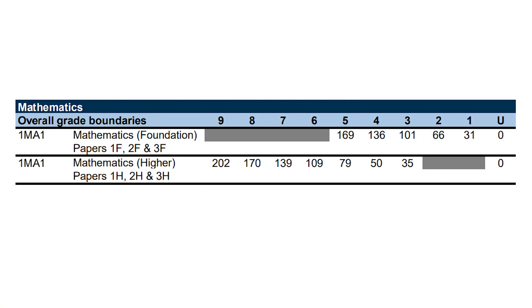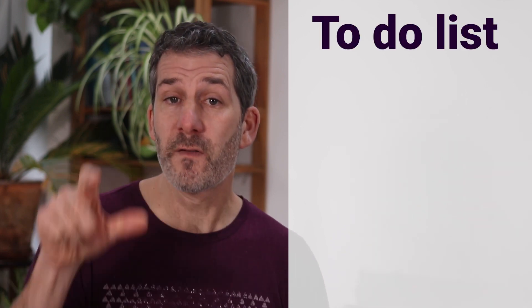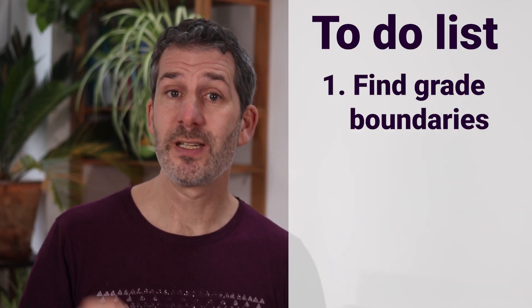On the screen there are the grade boundaries for the Edexcel June 2018 papers. The mark you can see there is the total mark you need from all three papers, so that's out of 240, and it varies but it's typically between 30 and 35 marks between each grade. So if you've got 136 marks and just scraped a grade 4 in a foundation paper, you needed 33 more marks to get a grade 5 — so an average of 11 per paper. We don't know what the grade boundaries will be for your actual exam, but you've now got a much clearer idea of where you are.